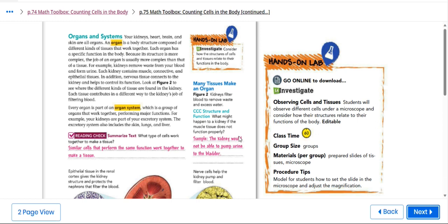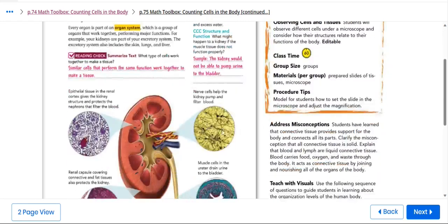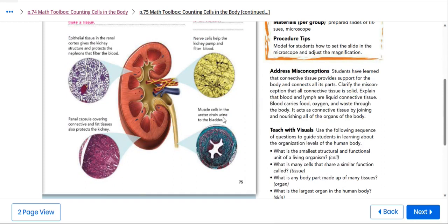What type of cells work together to make a tissue? Similar cells that perform the same function work together to make a tissue. For example, we have here nerve cells that help the kidney pump and filter blood. This is a kidney. We have the muscle cells in the artery that drain urine to the bladder. We're going to talk about this in detail once we reach that point.